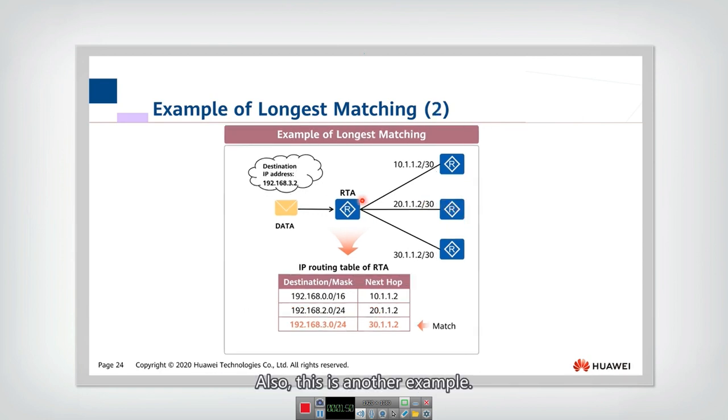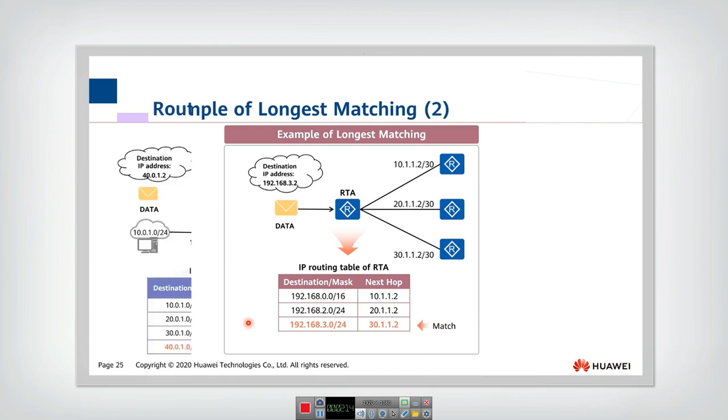This is another example. If we have the routing table like this, and we want to transmit to this destination, we can see that both this one and this one are matched, but this one has the longer match. So we will transmit the packet to this router according to this entry with the longest match.